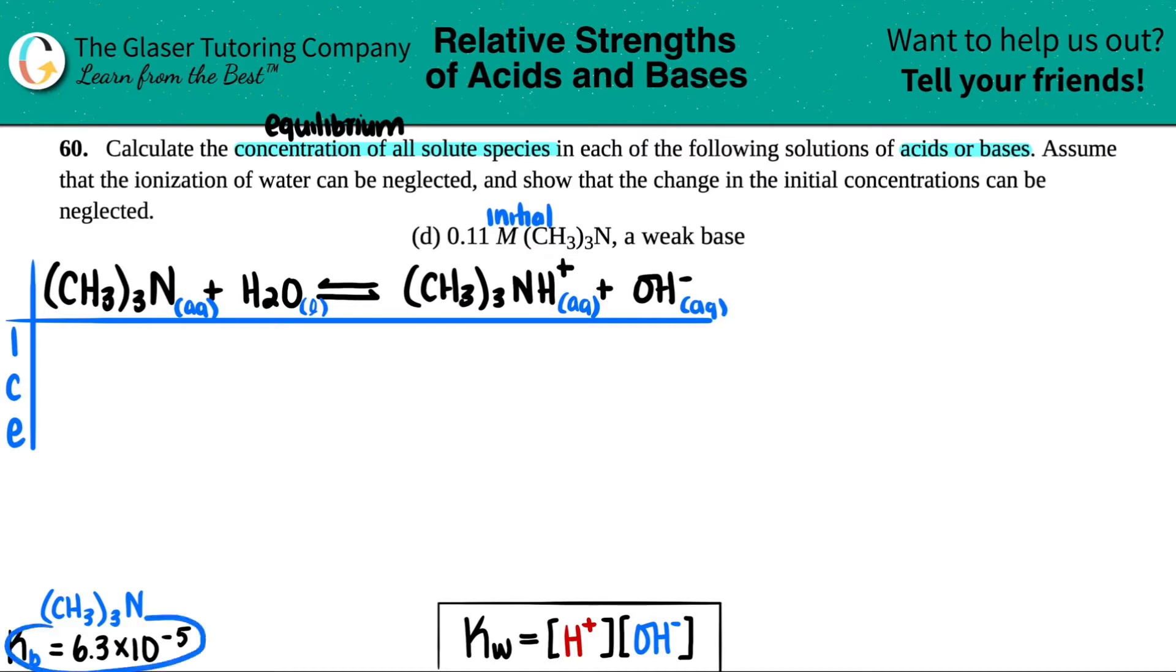That's what they meant by assume the ionization of water can be neglected, is that we don't take into consideration any H₂O breaking down to affect our OH minus concentration. Plus it's a liquid. Now 0.11 molarity of CH₃₃N, that was the initial concentration. Did they mention that I had any CH₃₃NH plus or OH minus concentration starting? I don't see it. If they don't say anything, we assume we didn't start off with any of it. Zero, zero.